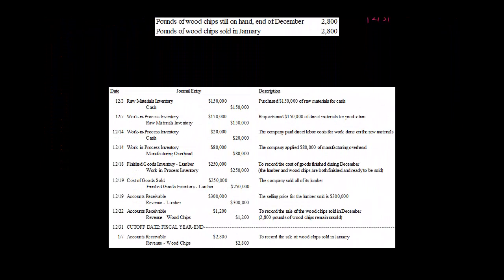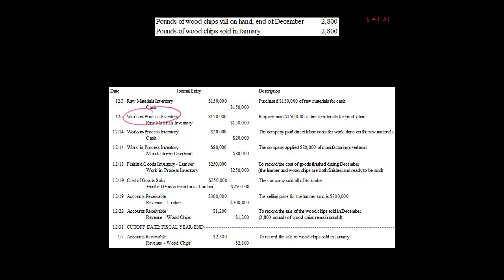Let's assume that the company bought $150,000 of raw materials — which would be trees — for cash on December 3rd. So we've got $150,000 of raw materials inventory, but then they put all of the raw materials into production; they're all used as direct materials. So we're going to debit work in process inventory and credit raw materials inventory. We're just transferring from one type of inventory to another.